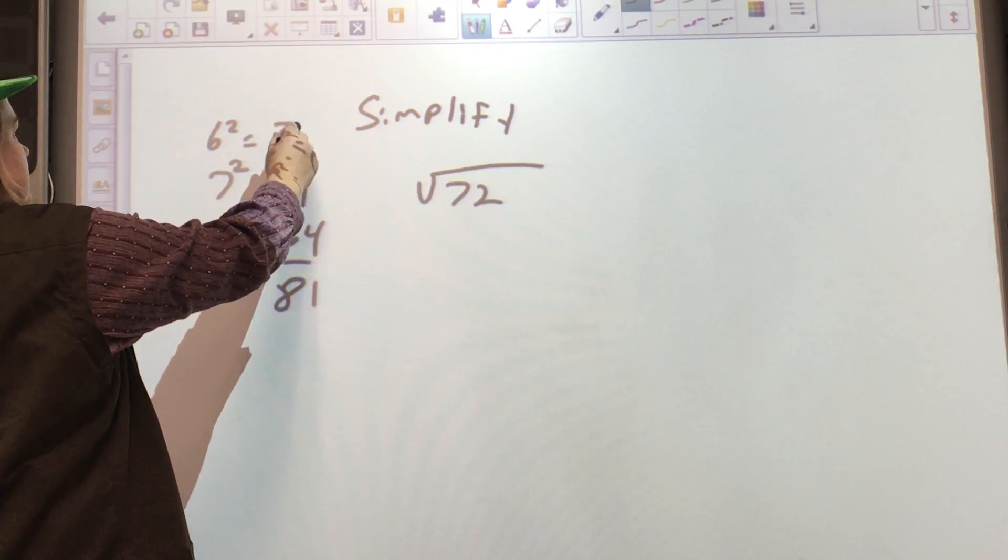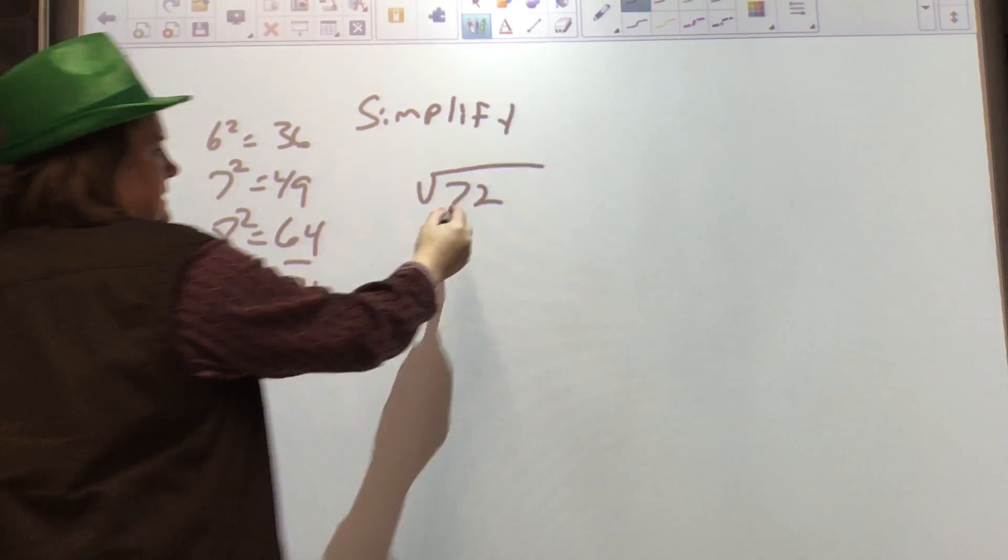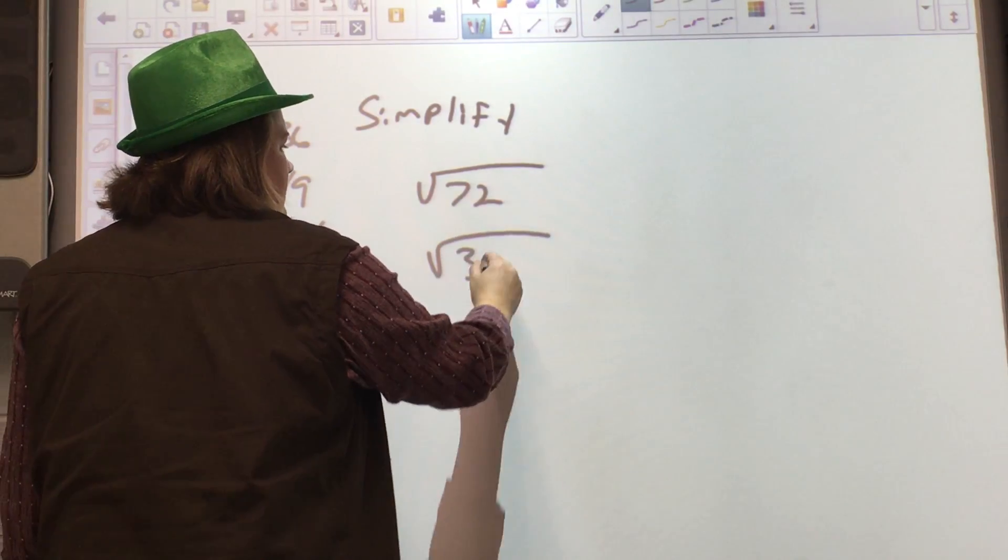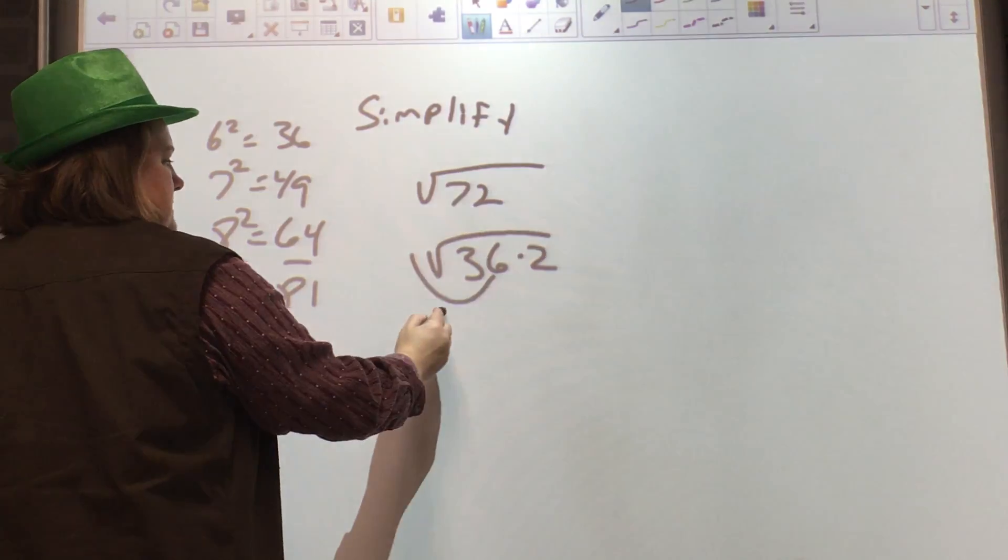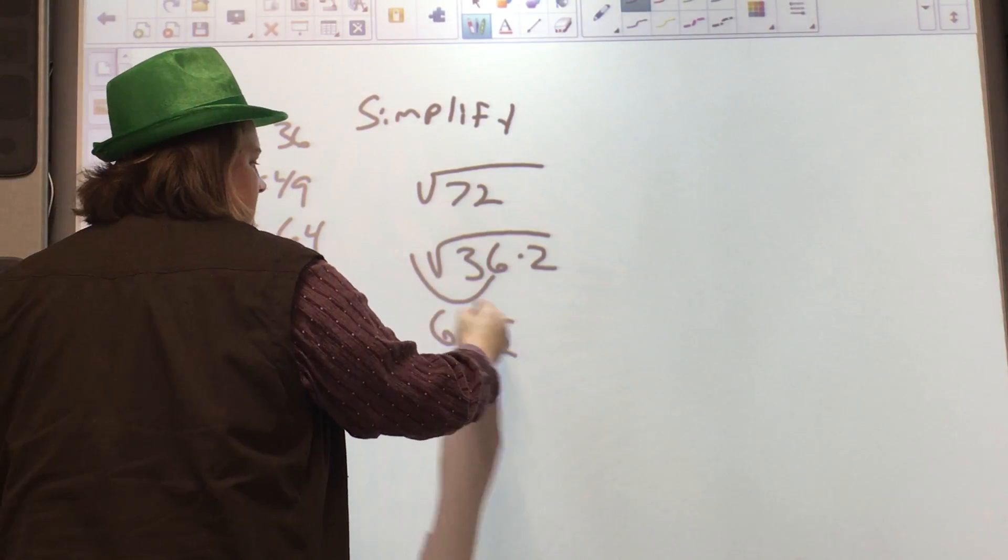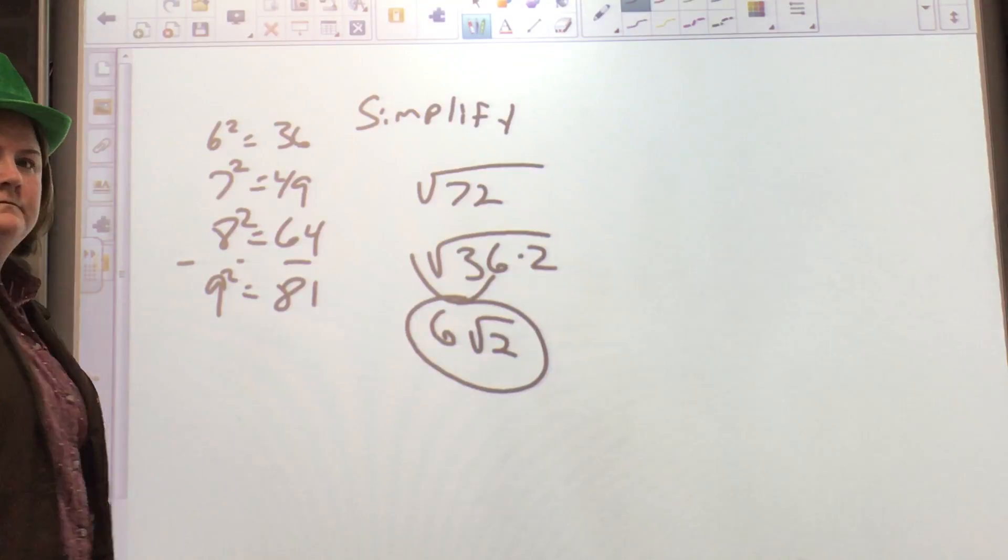6 squared is 36. Ding, ding, ding. 72 is the same as 36 times 2. What's the square root of 36? 6. So this would be 6 square root of 2. That's it.